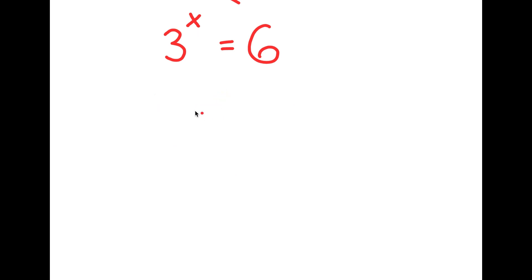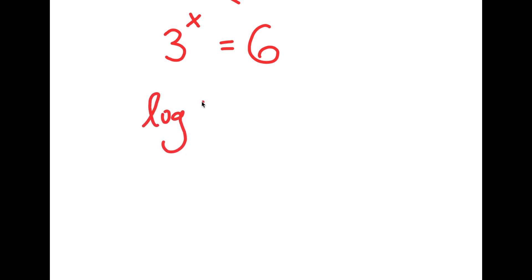So, to find the exact value of x, we're going to have to use logarithms. So if I take the log on both sides, I get log 3 to the power of x is equal to log 6.